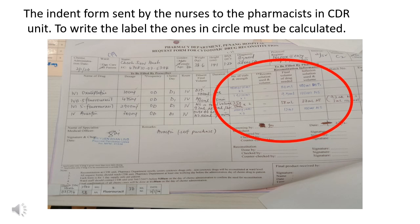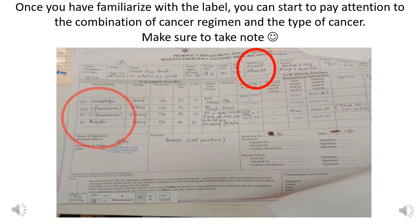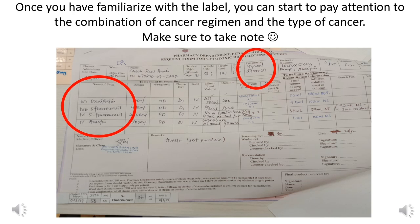This is the indent form sent by the nurses to the pharmacists in the CDR unit. In order to write the label, the ones in the circle must be calculated. Once completed, the label can be written, and both must be counter-checked by the pharmacists to prevent any sort of error. Once you have familiarized yourself with the label, you can start to pay attention to the combination of cancer regimens and the type of cancer.